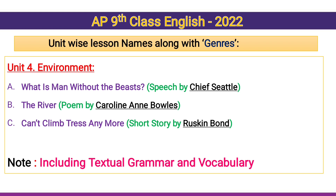Unit 4: Environment. Reading A — 'What is a Man Without Beast,' a speech delivered by the Red Indian chief Seattle. Reading B — 'The River,' a poem written by Caroline Annables. Reading C — 'Can't Climb Trees Anymore,' a short story written by Ruskin Bond. Including textual grammar and vocabulary.